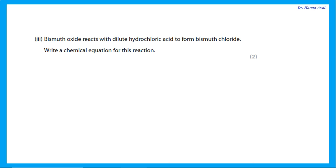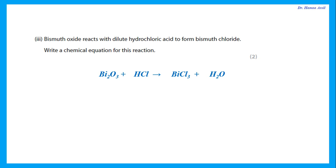Bismuth oxide reacts with dilute hydrochloric acid to form bismuth chloride. Write a chemical equation: Bi₂O₃ + HCl → BiCl₃ + H₂O. The valency of bismuth is 3, so bismuth chloride is BiCl₃. Oxide + acid → salt + water. Balancing: two bismuths before the arrow, so two BiCl₃ after. Three oxygens before, so three H₂O after. That means six hydrogens and six chlorines after the arrow, so put 6 in front of HCl. Balanced: Bi₂O₃ + 6HCl → 2BiCl₃ + 3H₂O.